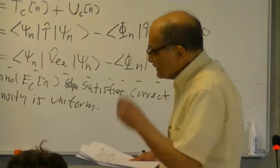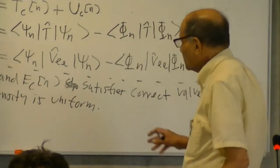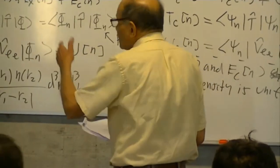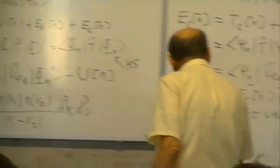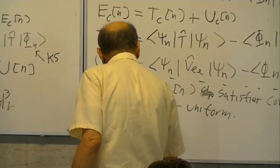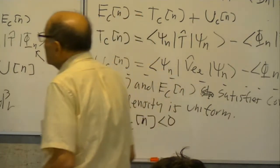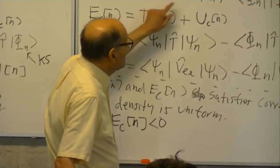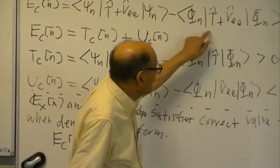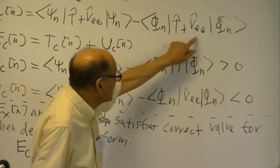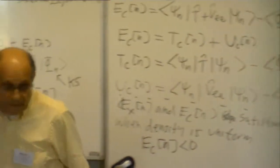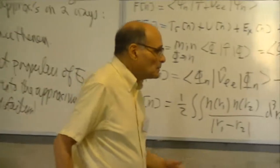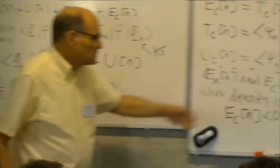I would concentrate on coordinate scaling for most of this lecture. First of all, these functionals that are successful have Ex as negative, but also Ec[n] must be less than zero. Because this is the definition: psi_n minimizes T plus Vee, and phi_n minimizes just T, but we're taking the expectation value of T plus Vee. So you see just from the definition, you get the sign constraints right away.